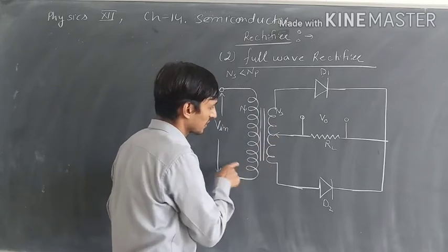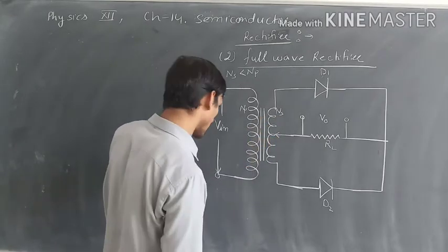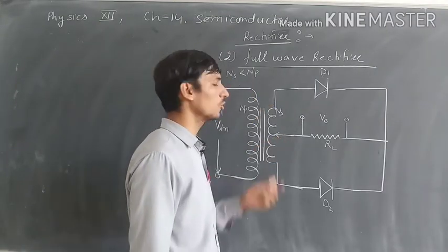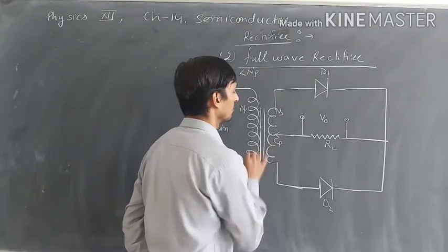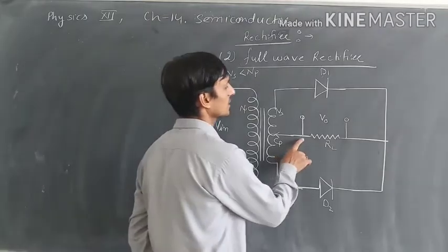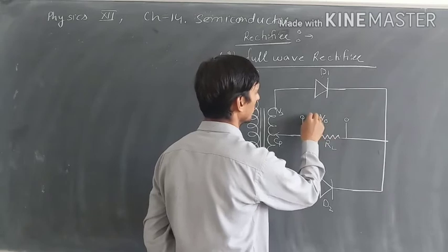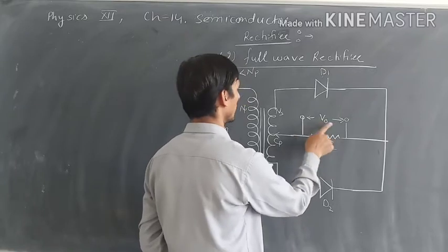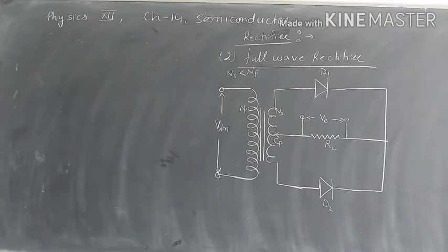This is a step down transformer and specifically a center tap transformer. Center tap transformer mein kya hota hai — ki joh windings ki dono ends hain, uske center mein ek connection hoga jisko center tap bolte hain. Aur yeh RL ka connection idhar se hai, aur RL ke across hum voltage consider karenge. Current is RL ke through flow hogi. Yeh aapke paas full wave rectifier ka circuit hai.